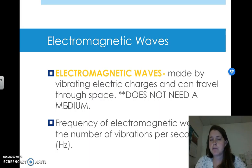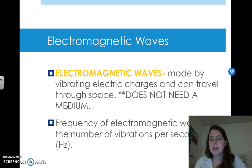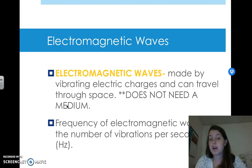Electromagnetic waves are made by vibrating electrical charges — like electrons and protons. They can travel through space, meaning they don't need a medium. A medium is just something that a wave can travel through, such as air or water. Electromagnetic waves don't need anything, which is why they can travel through space.